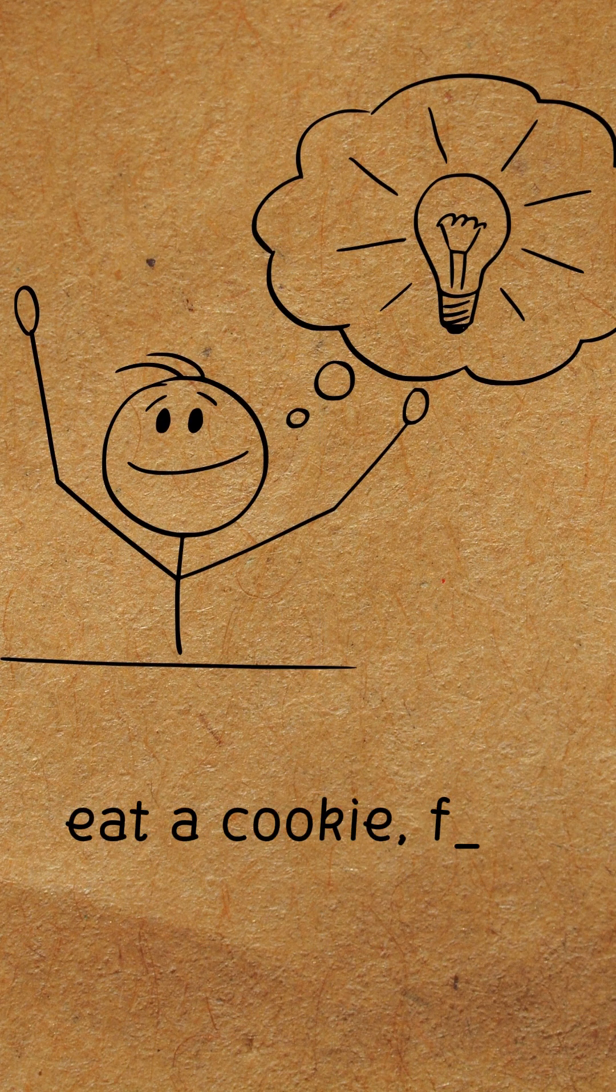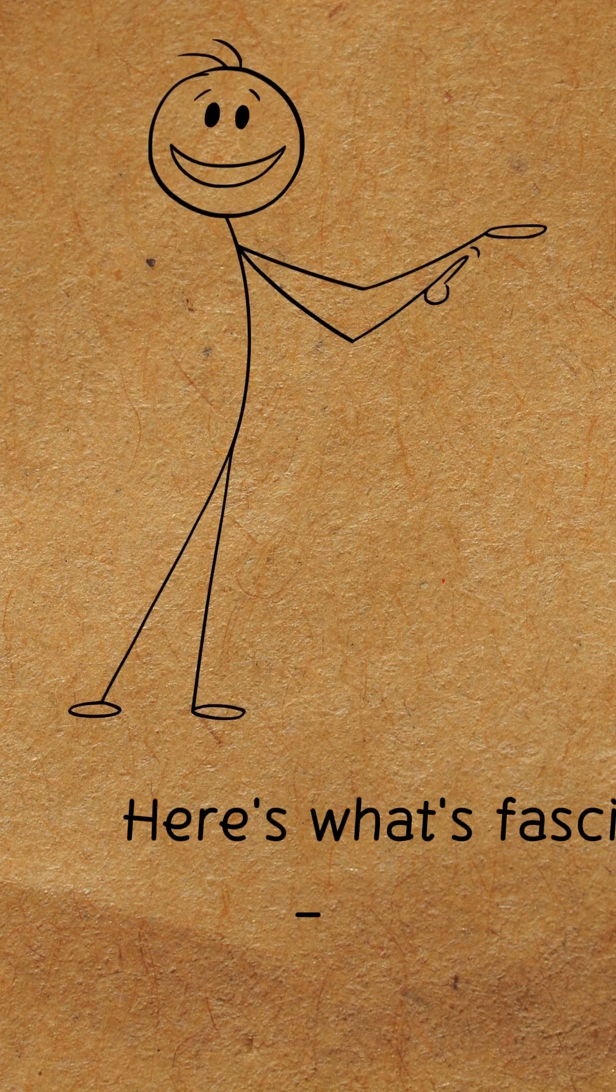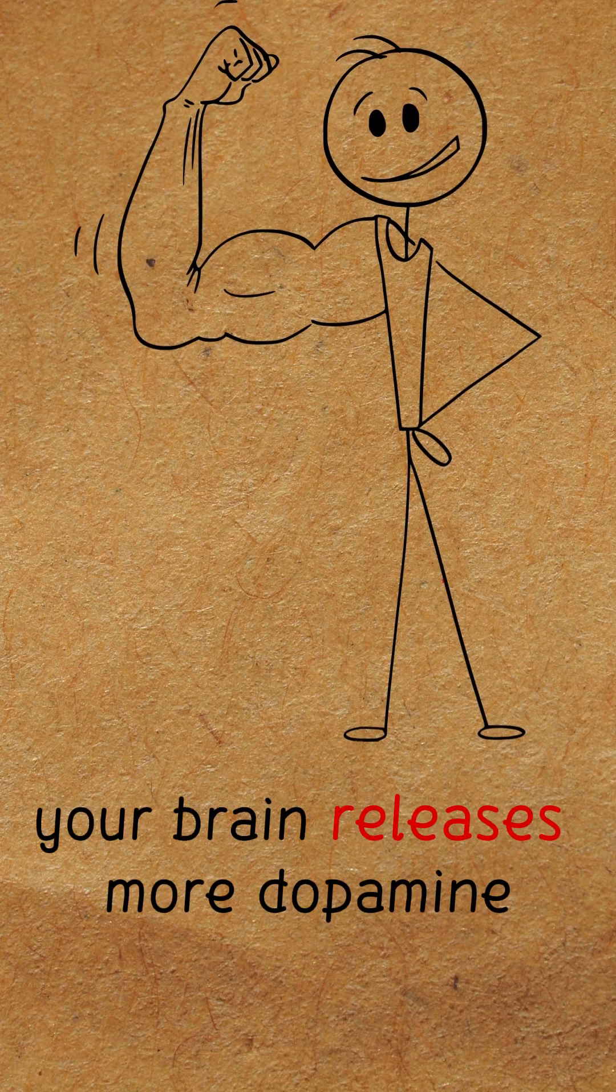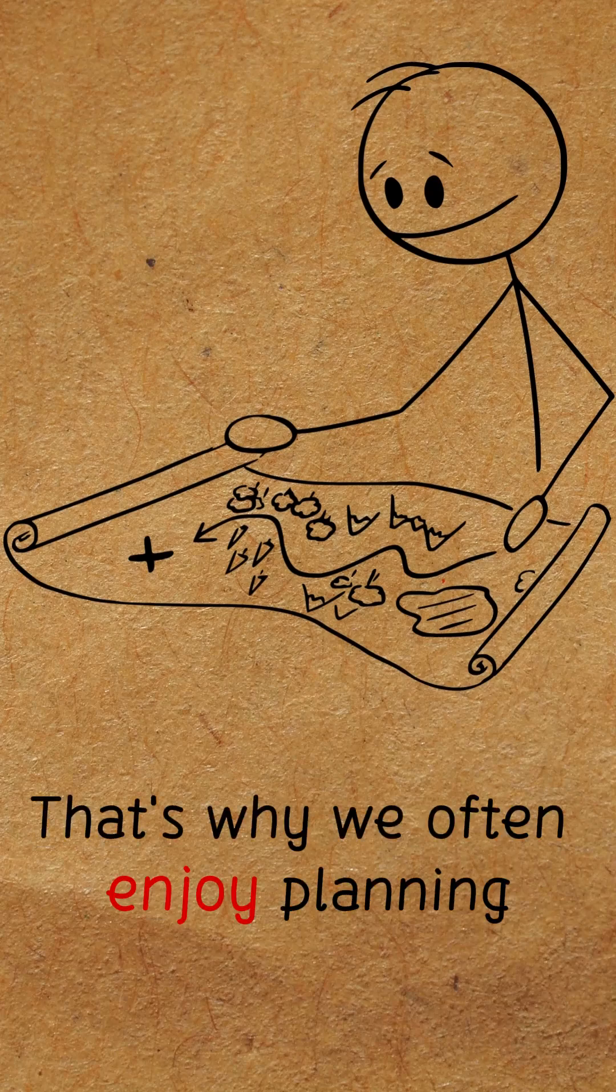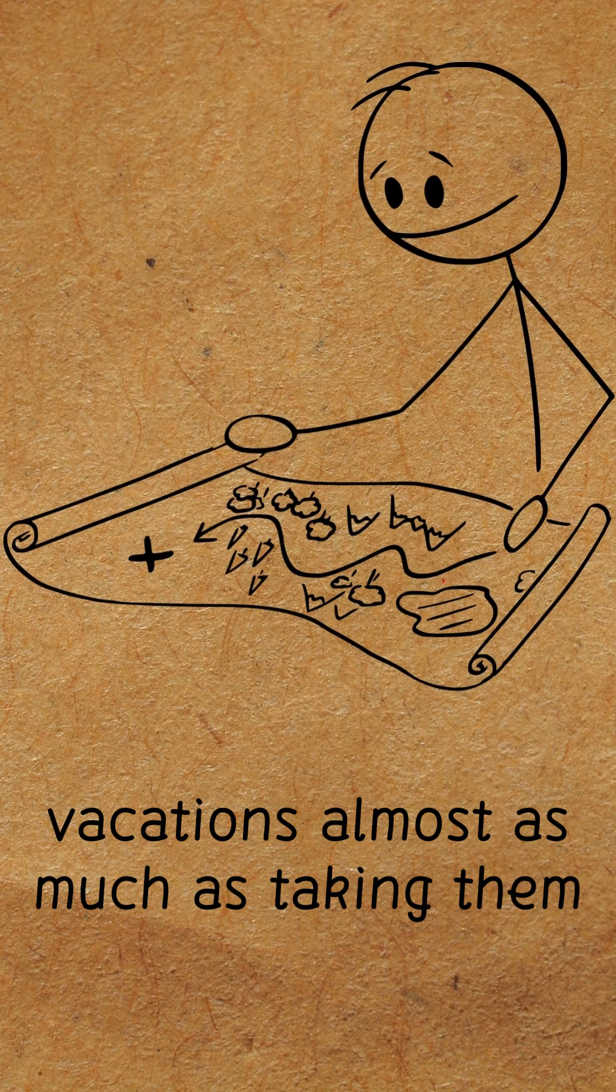See a cookie, want a cookie, eat a cookie, feel good. Here's what's fascinating. Your brain releases more dopamine when anticipating a reward than when actually receiving it. That's why we often enjoy planning vacations almost as much as taking them.